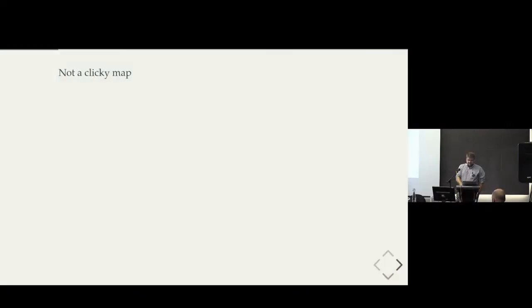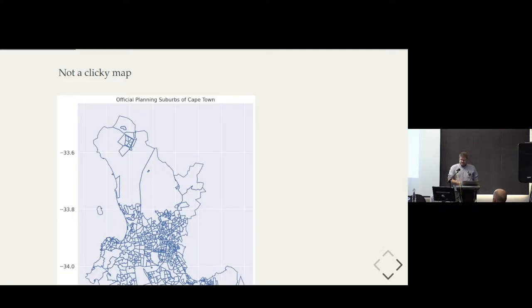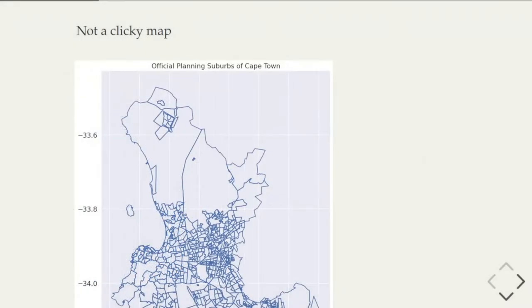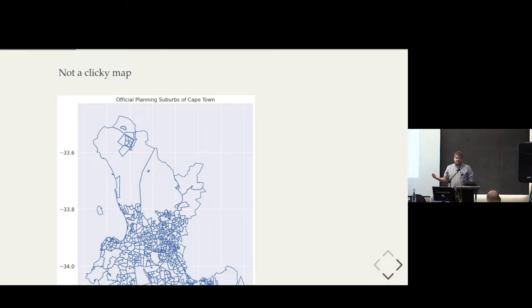Just to give you some examples — first of what are not clicky maps, to give you some intuition. This is a static map of the top half of the city of Cape Town, the suburbs of Cape Town. You can't really click on this, it doesn't do anything. It's certainly a cartographic map, and we could host this file somewhere, but it doesn't meet the threshold because it's not an interactive feature.